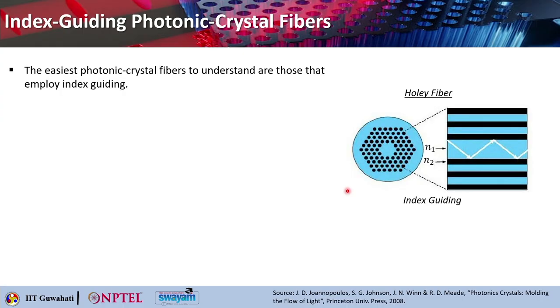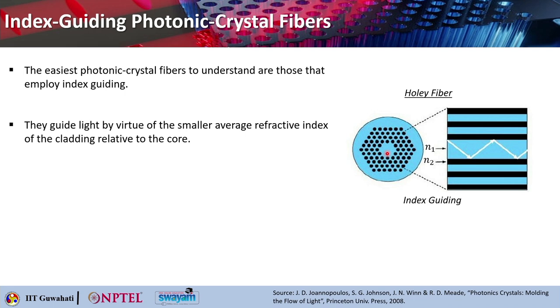We will quickly go into the details in this lecture. This is the easiest photonic crystal fiber to understand. It employs index guiding. You can create an array of holes that reduce the refractive index of the cladding. That is how you can take the cross section and think of it as N1 being high and N2 being low, and the light is basically guided through modified total internal reflection.